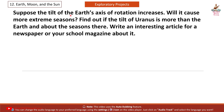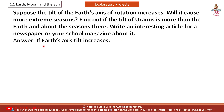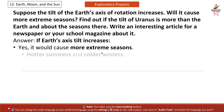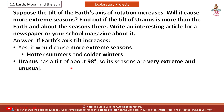Suppose the tilt of the Earth's axis of rotation increases — will it cause more extreme seasons? Find out if the tilt of Uranus is more than the Earth's and about the seasons there, and write an interesting article for a newspaper or school magazine about it. Answer: If Earth's axis tilt increases, yes, it would cause more extreme seasons — hotter summers and colder winters. Uranus has a tilt of about 98 degrees, so its seasons are very extreme and unusual.